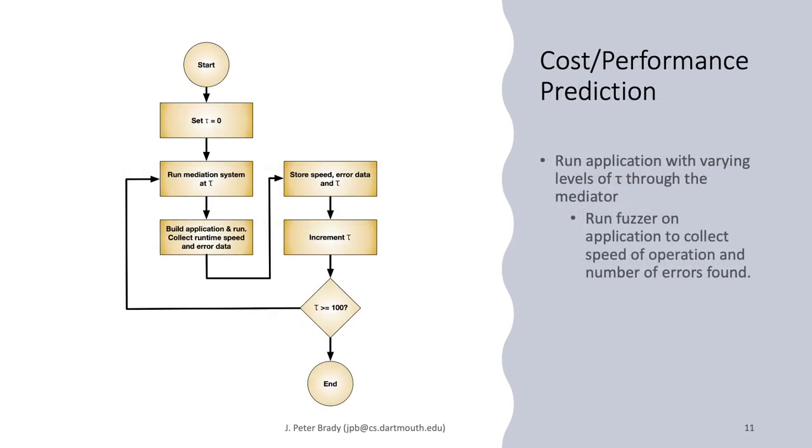Now that we have a way of inserting LangSec statements into our application we can do cost performance prediction by varying the levels of tau. That's the levels of the amount of parsing we're going to do by running the mediator multiple times. And collect that information by running the application with a fuzzer. We can then collect the speed of operation and the number of errors found.